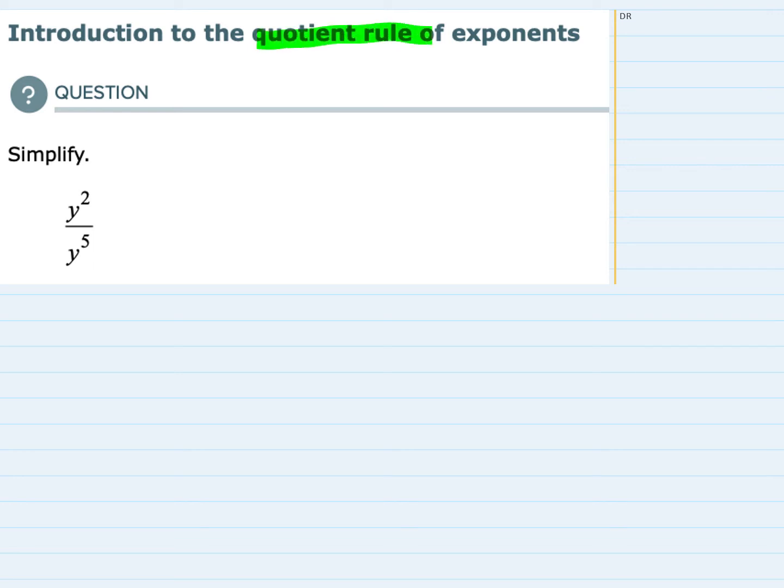The Quotient Rule of Exponents says when we have an exponent raised to a power in the numerator and an exponent raised to a power in the denominator, as we do here, we are supposed to keep that exponent, y, and subtract the exponents.